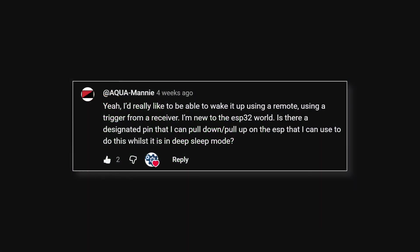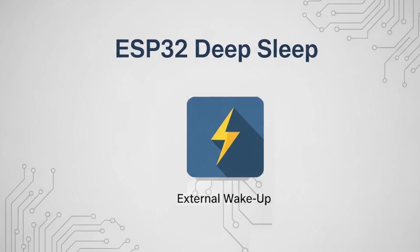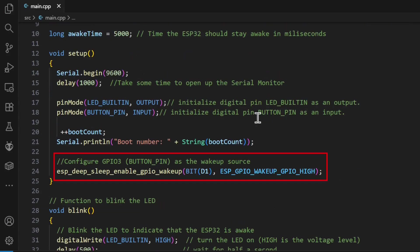First up, one of the most asked questions from users. In our last video we used a timer to wake the ESP32. But what if you need to wake it up for a real-world event like a door opening or a button press? For this we need to use an external wake up. The secret is a special function called ESP deep sleep enabled GPIO wake up. This lets us pick a specific pin to act as a trigger.